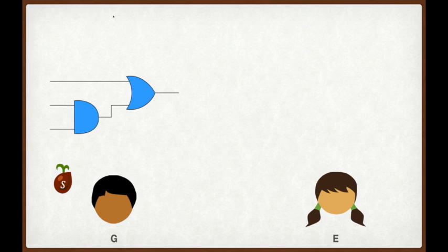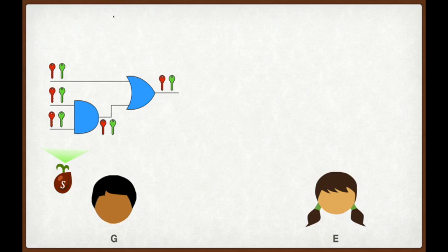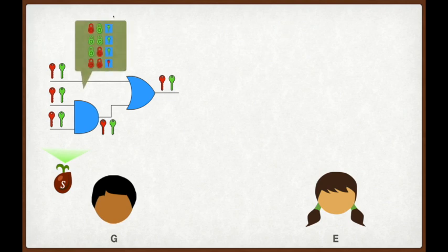This choice of seed will become important later when we talk about stacked garbling. He then expands this seed to choose pseudorandom keys, two per wire. The two different keys represent the possible semantic values that can appear on the wire. For example, in this diagram, a red key represents a logical zero and a green key represents a logical one. Based on these keys, he constructs encrypted versions of the truth tables of each of the Boolean gates.